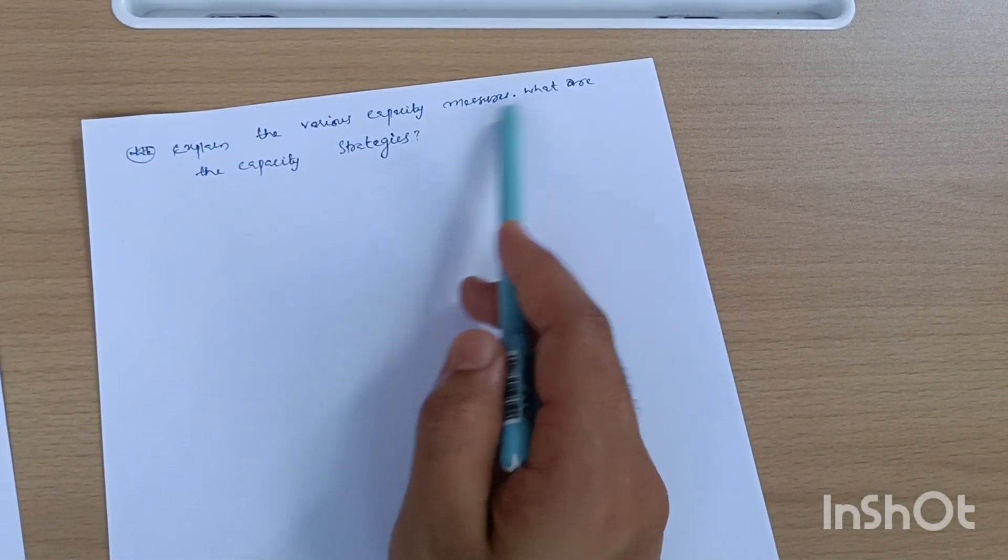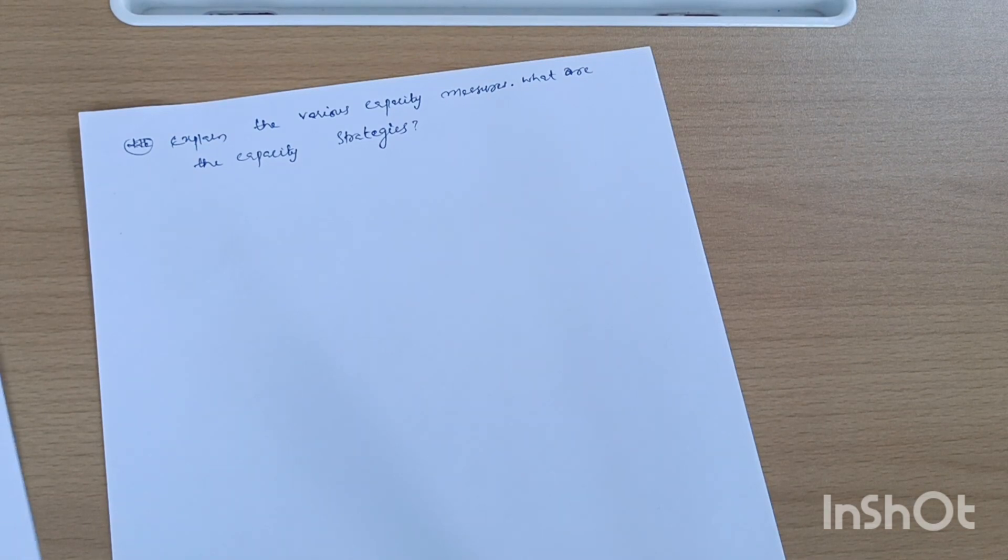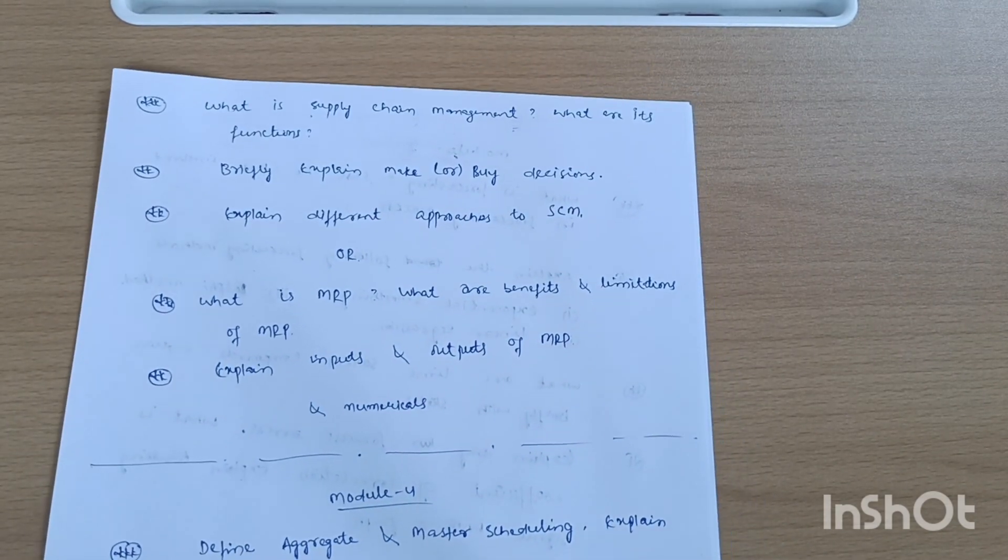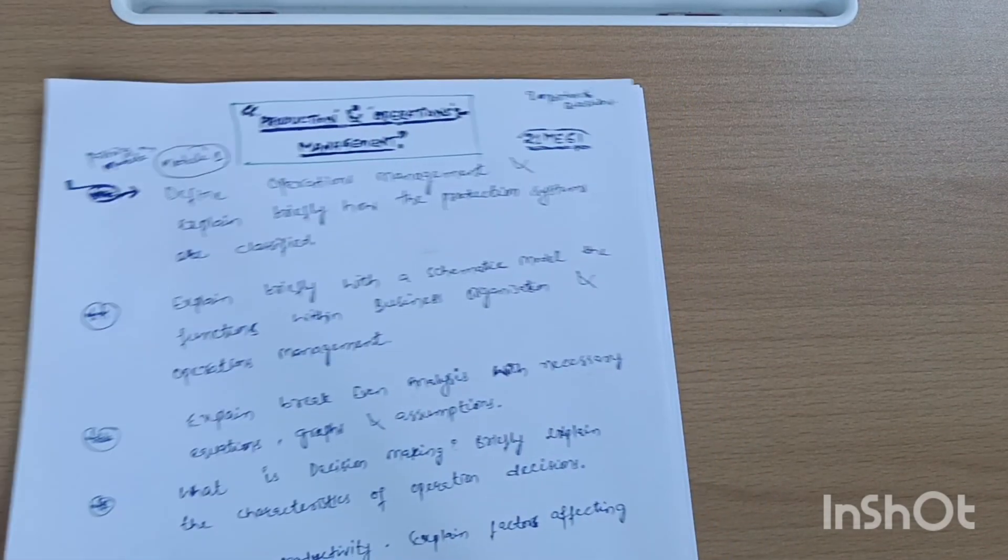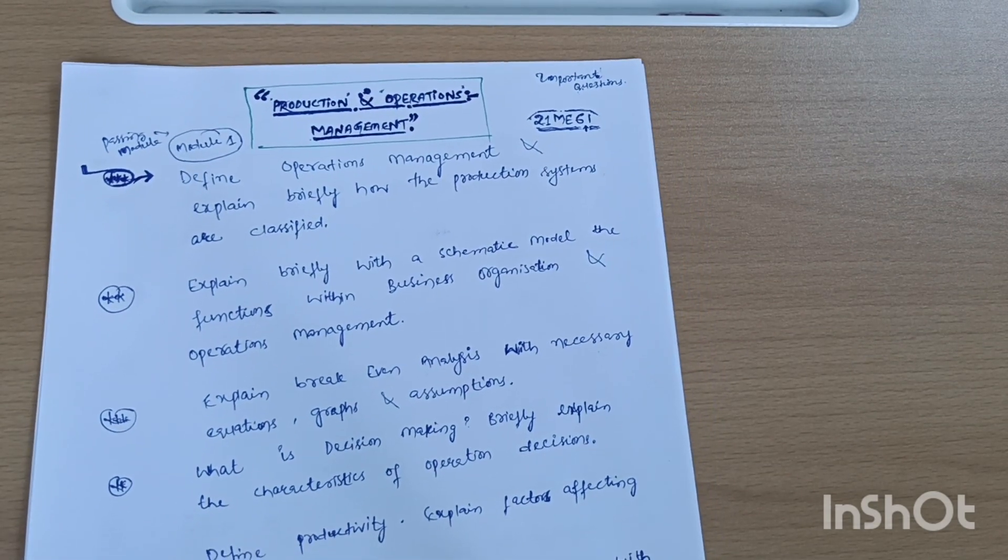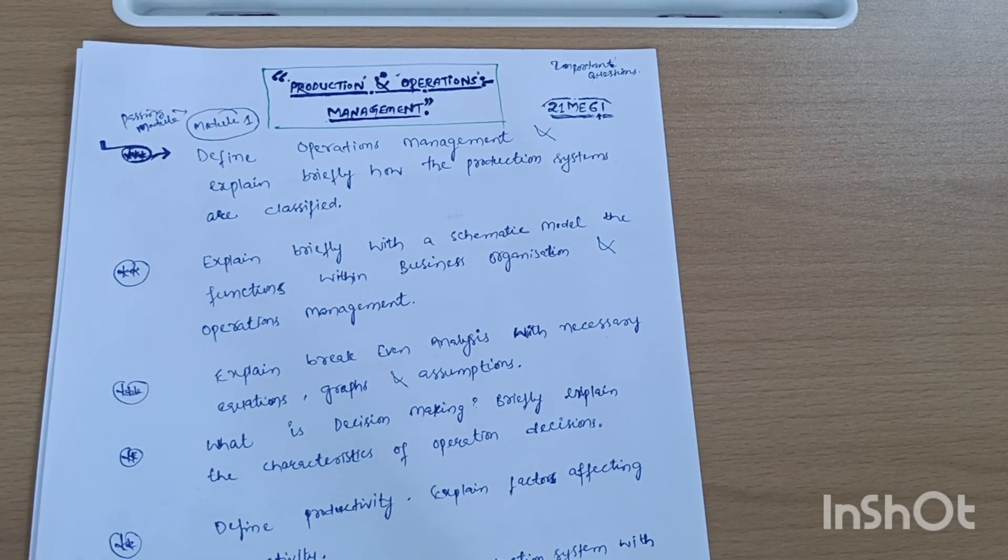This is all about Production and Operations Management subject. If you cover this much portion, you will easily pass the subject, not only pass but score well, provided you go through numericals also from the 18ME56 paper. You will be on the safer side and you can score more and more in the subject. I wish you all the best for your examination.